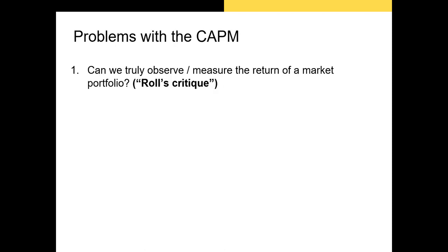There are a lot of well-known problems with the CAPM. I'll just mention a few of the most prominent ones here. As you might remember from the last video, we use historical data to estimate betas. We then use those betas to calculate expected returns and see how much explanatory power the CAPM has.